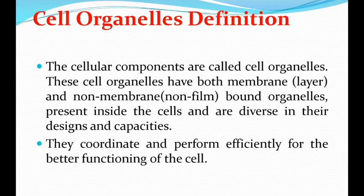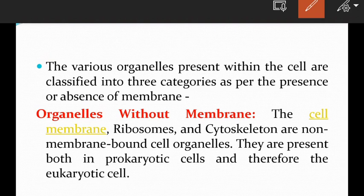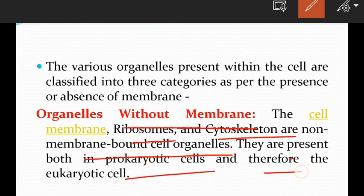The various organelles present within the cell are classified into three categories based on the presence or absence of membrane. The first category is organelles without membrane. The cell membrane, ribosome, and cytoskeleton are non-membrane-bound cell organelles. They are present in both prokaryotic and eukaryotic cells.